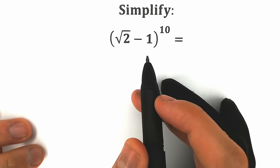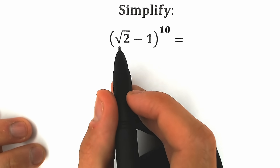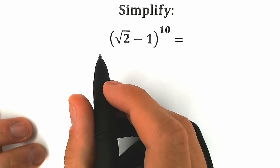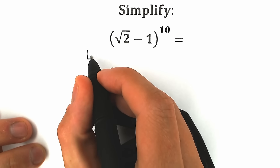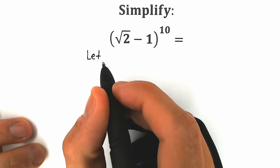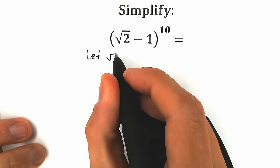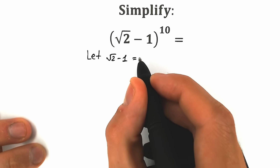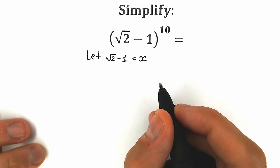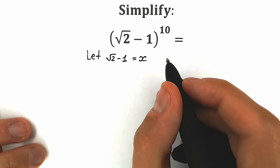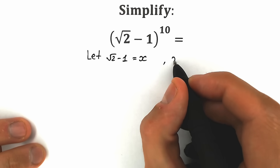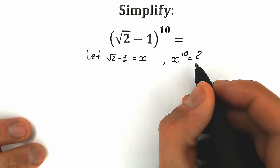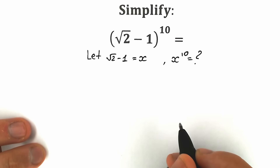Let's see how we can do this. First of all, let square root of 2 minus 1 be x. So we call this expression x. And basically we need to find x to the 10th power.